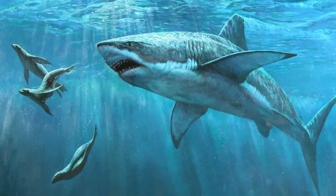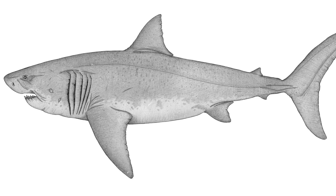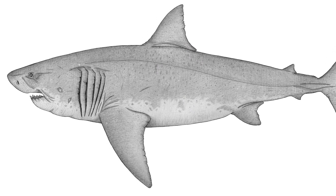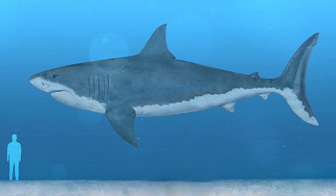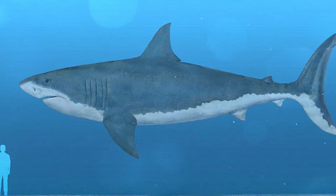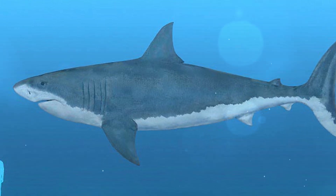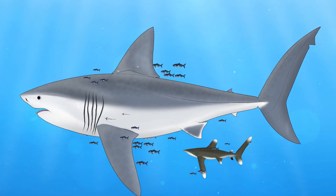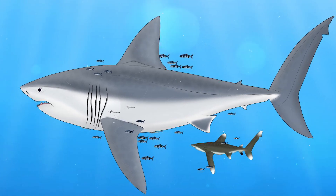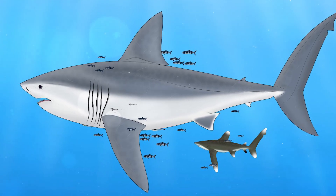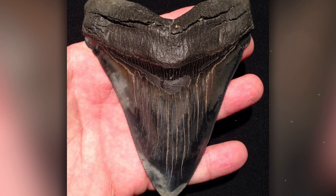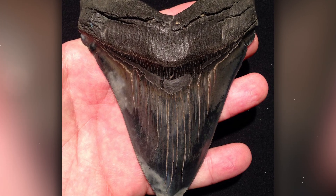Carcharocles chubutensis is the immediate ancestor of Megalodon, which existed about 28 to 20 million years ago. This species is considered transitional between Otodus angustodens and Megalodon itself. Chubutensis had teeth that were even larger and more massive than those of its ancestors, reaching lengths of up to 5 inches. The shape of the teeth resembled that of Megalodon, but with more pronounced lateral processes.